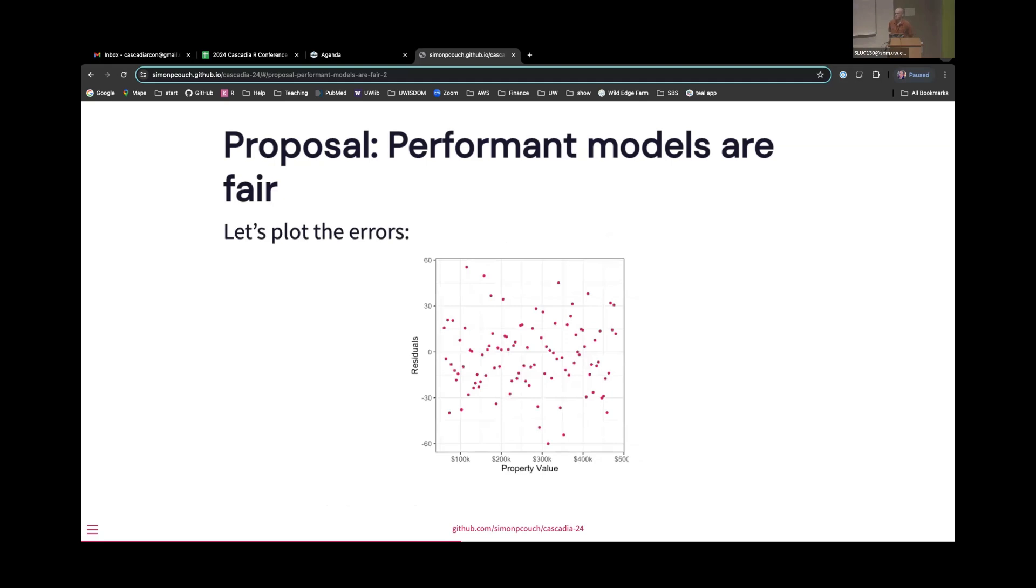Let's take a look and make sure that those errors are independently and identically distributed. What that means is that the variance and the mean of the errors is constant across the outcome, the distribution of the outcome. So it looks to be just about the case. The errors are similar for a house that's $100,000 and $500,000. And to me, that feels like exactly the problem. If I'm the owner of a $100,000 house, and I'm just as likely to receive an error of $50,000 in the assessment of my home as somebody who owns a $500,000 house, that error as a percentage is much more impactful to me.